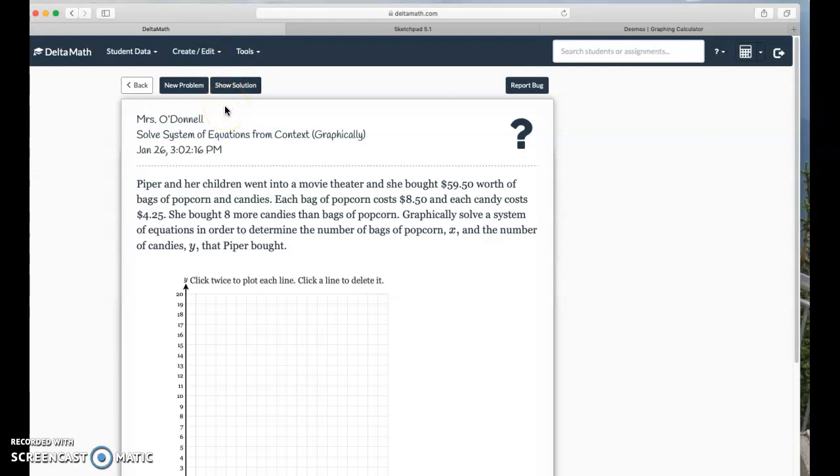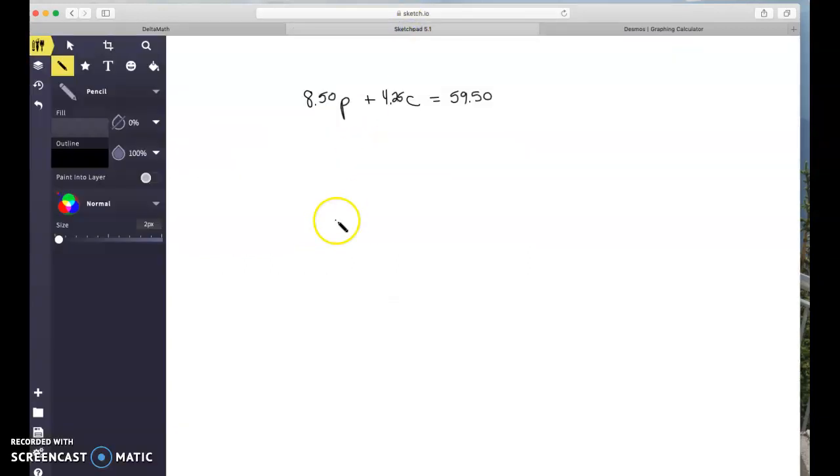Now we have to figure out what is the second equation that we can derive from this context. Well if you keep reading it says she bought eight more candies than bags of popcorn. So popcorn plus eight gives us the total number of candies.